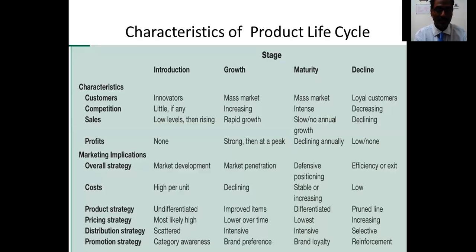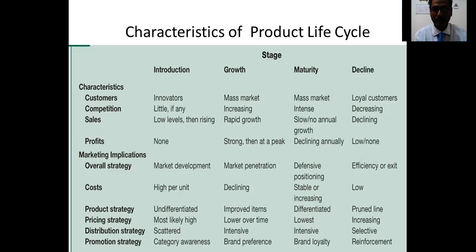Now we look at characteristics of the product life cycle across different stages: customers, competition, sales volume, and profit. In the introduction stage, customers are innovators — people who try new things. In the growth stage, customers become the mass market. In the maturity stage it is again the mass market. During decline, only loyal customers continue to buy the product.